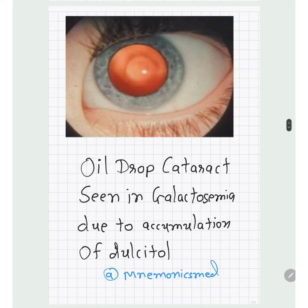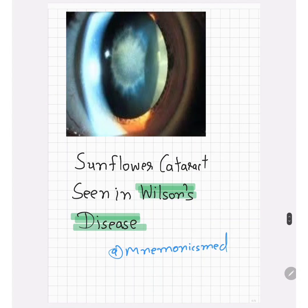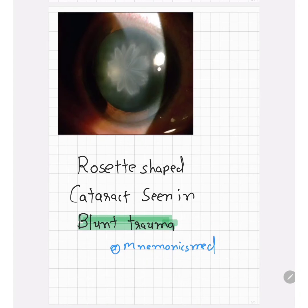The next image is sunflower cataract, which is most commonly seen in Wilson's disease. You can easily remember this by seeing the sunflower pattern shown in the image. This type of cataract is characteristically associated with Wilson's disease.